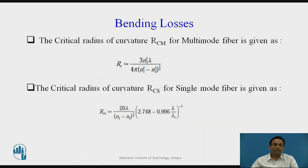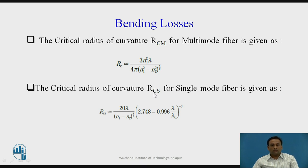To calculate the bending losses for multimode and single-mode, different formulas are used. For multimode, the critical radius RCM is given by: RCM = 3·N1²·λ / (4π·(N1² − N2²)^(3/2)), where λ is the operating wavelength and N1, N2 are the refractive indices. For single-mode, the critical radius RCS is given by: RCS = 20λ / (N1 − N2)^(3/2) · (2.748 − 0.996·λ/λC)^(−3), where λC is the cut-off wavelength.